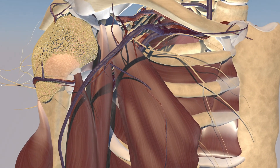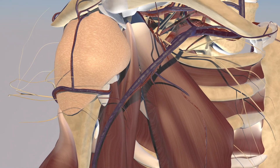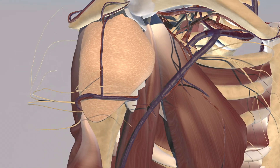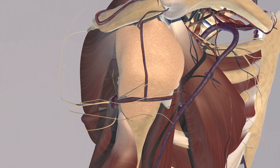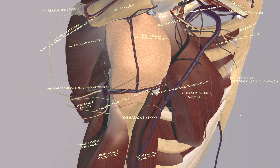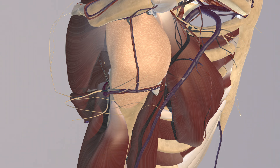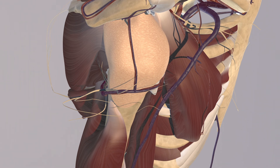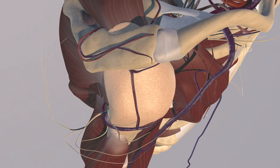Here we're rotating laterally and we can appreciate the subdeltoid bursa with some of the peribursal fat which we just removed. We can also appreciate some of the underlying vasculature, part of which is the anterior humeral circumflex artery which feeds into the posterior humeral circumflex artery. Again you can appreciate the cephalic vein.